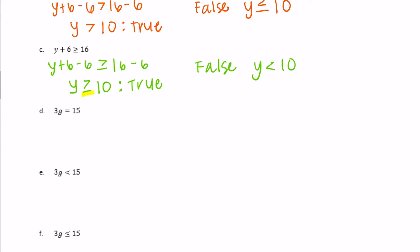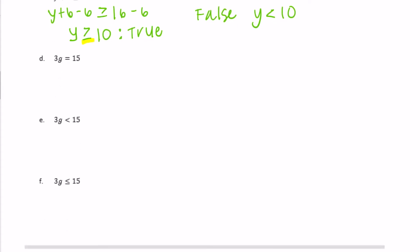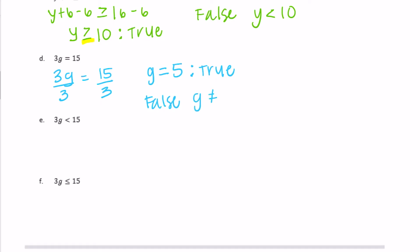Part d: 3g equals 15. We divide both sides by 3: 3g divided by 3 equals 15 divided by 3, so g equals 5. It's true when g equals 5. It would be false if g is anything other than 5 — if it's 5 and a half or 2, it's not true.